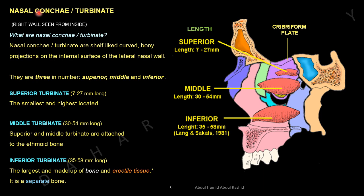Nasal conchae or turbinates. Nasal conchae or turbinates are shelf-like curved bony projections on the internal surface of the lateral nasal wall. There are three: superior, middle, and inferior. The superior turbinate is the smallest at about 7 to 27 mm long. The middle one is about 30 to 54 mm long, and the inferior one is the longest at about 35 to 58 mm long. Superior and middle turbinates are attached to the medial surface of the ethmoid bone. The inferior turbinate is the largest and is a separate bone made up of bone and erectile tissue.